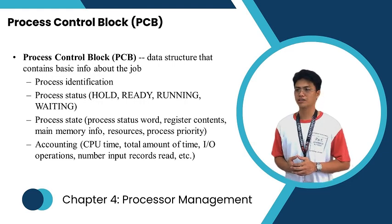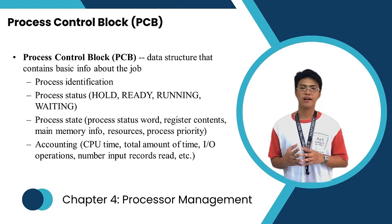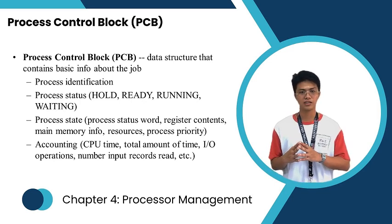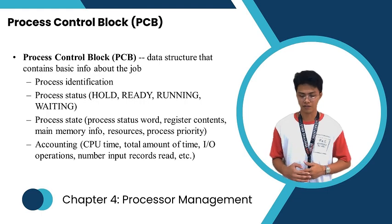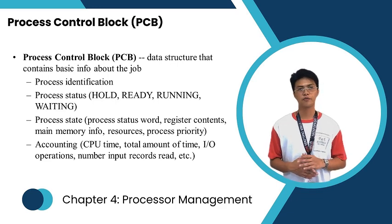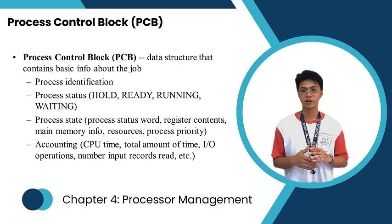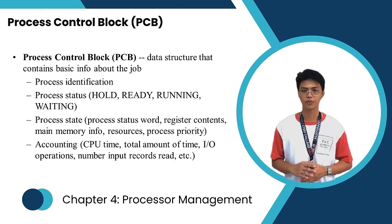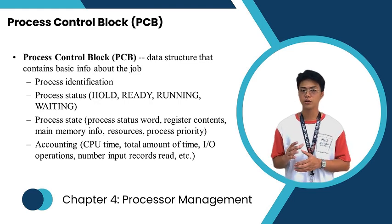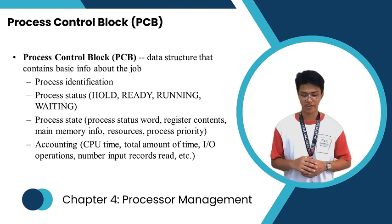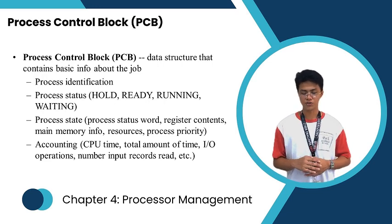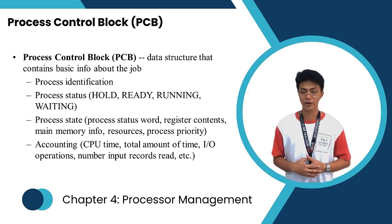Process identification is like a unique name — similar to declaring a variable in programming where every value must have a unique name. The process status indicates the current state of a process. Common states include: hold (not currently eligible for execution), ready (prepared to execute but waiting for the CPU), running (currently being executed by the CPU), and waiting (waiting for an event or resource).